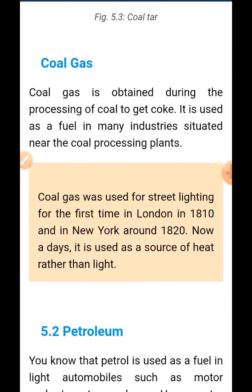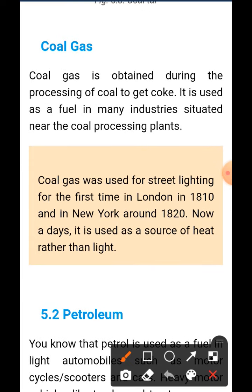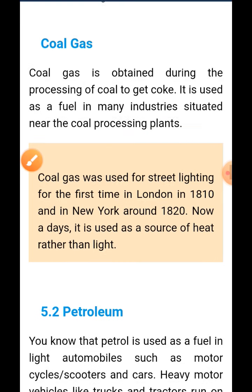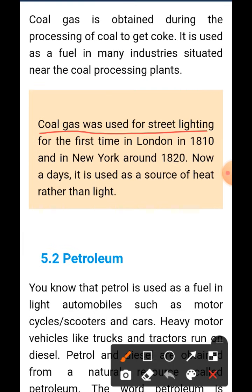Next is coal gas. Coal gas is obtained during the processing of coal to get coke. When coal is processed, a gas is released — that is coal gas. It is used as a fuel in many industries situated near the coal processing plants.